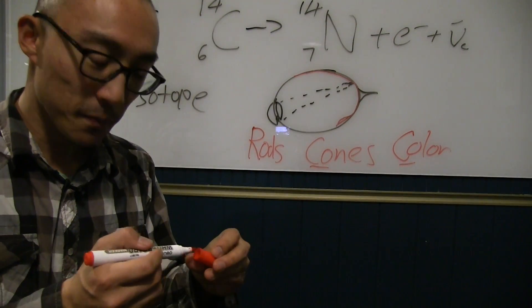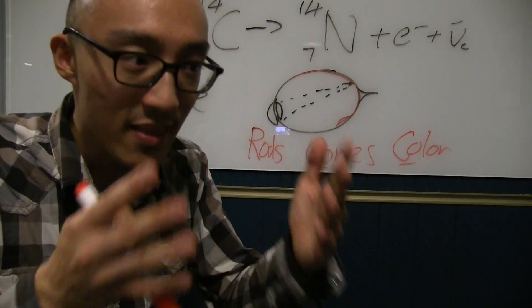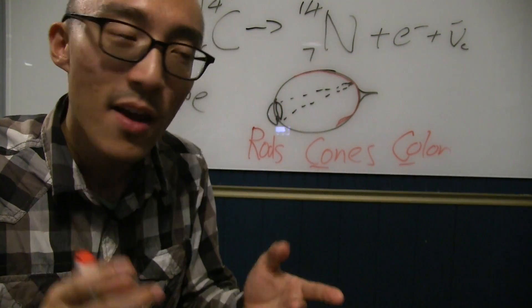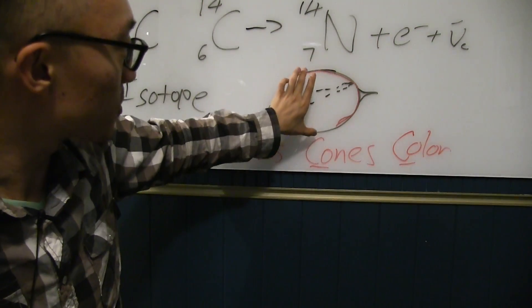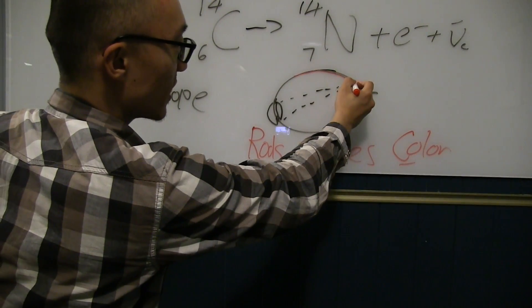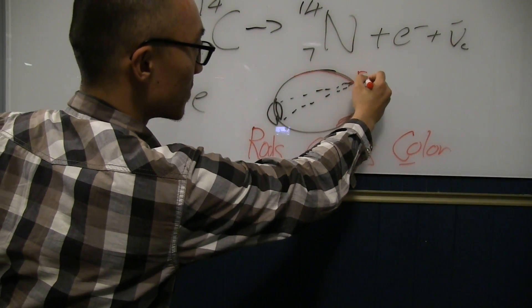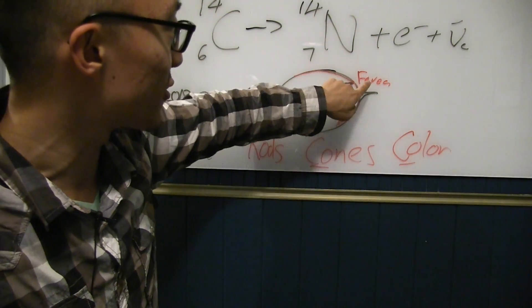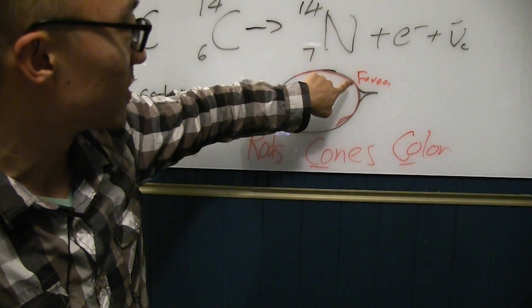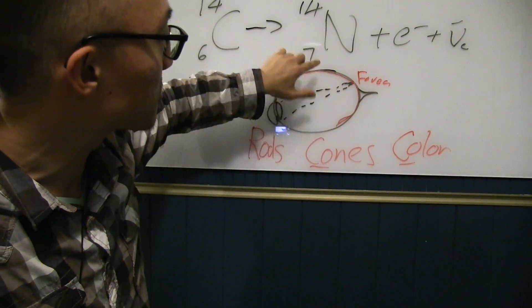Rods are basically, if you ever walk around at night and there's not a lot of light, right? You can still see, but things are more blurry. So, rods are responsible for that. Rods are basically, this little area here is called the fovea.